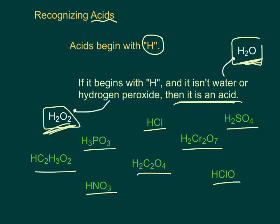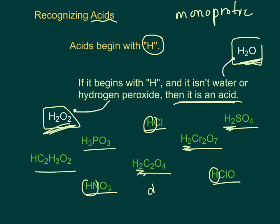The first trick is to be able to identify an acid. Some acids have one H — those are called monoprotic. Protic just refers to the H. Some of them have two H's — this is called diprotic. And I bet you can probably guess that this one right here is triprotic.